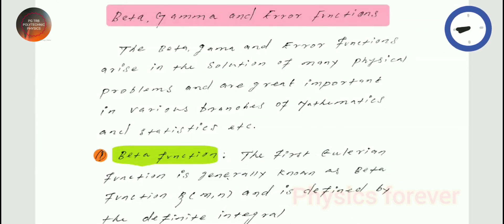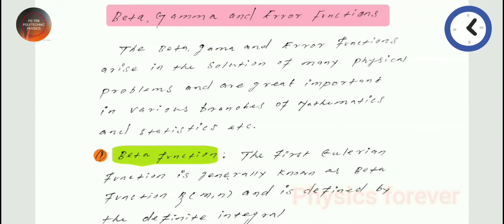We will get notes in handwriting. Beta function is the last study material. In the study material, we will start with the first unit. In this video, we will discuss the special function in the study material: special function, beta, gamma, and error function.